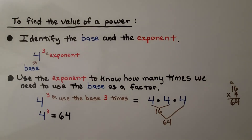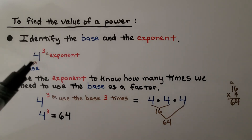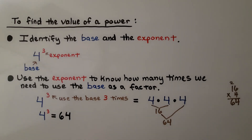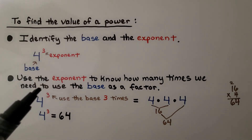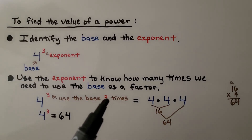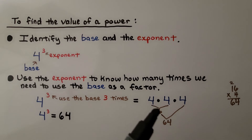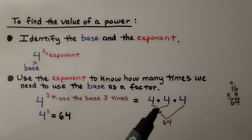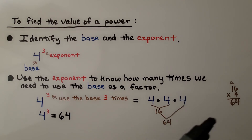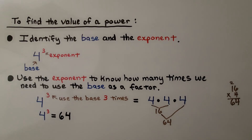So, to find the value of a power, we identify the base and the exponent. With 4 raised to the third power, 4 is the base and 3 is the exponent. We use the exponent to know how many times to use the base as a factor. We're going to use the base 3 times: 4 times 4 times 4. 4 times 4 is 16, and 16 times 4 is 64. So 4 raised to the third power is equal to 64.